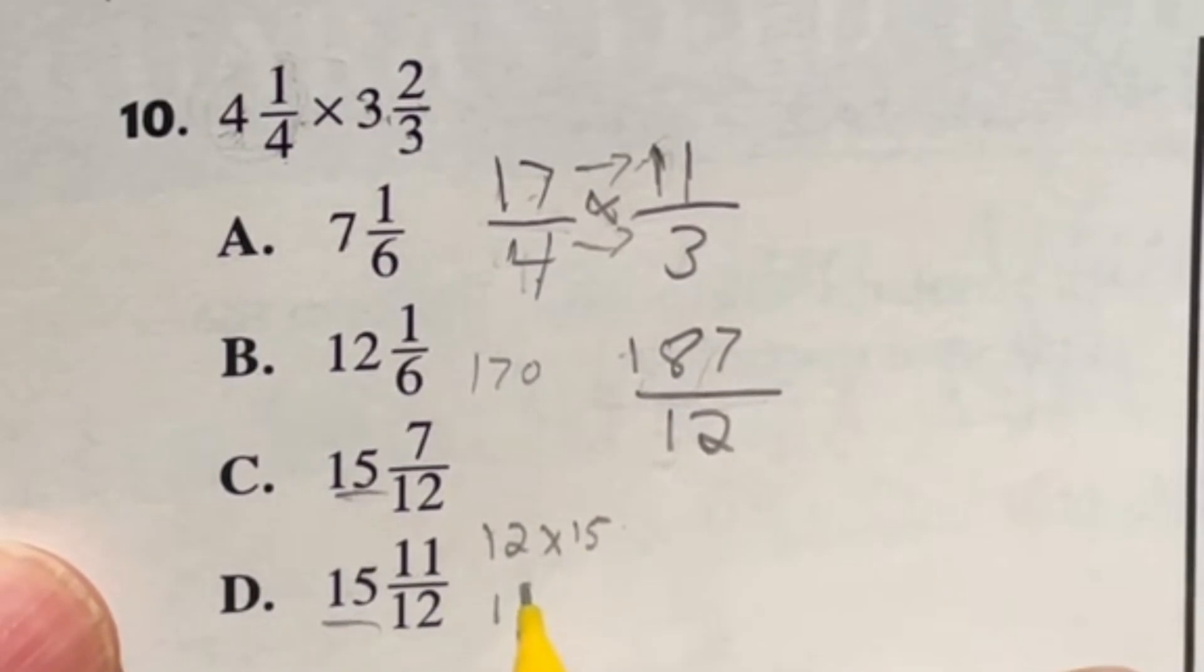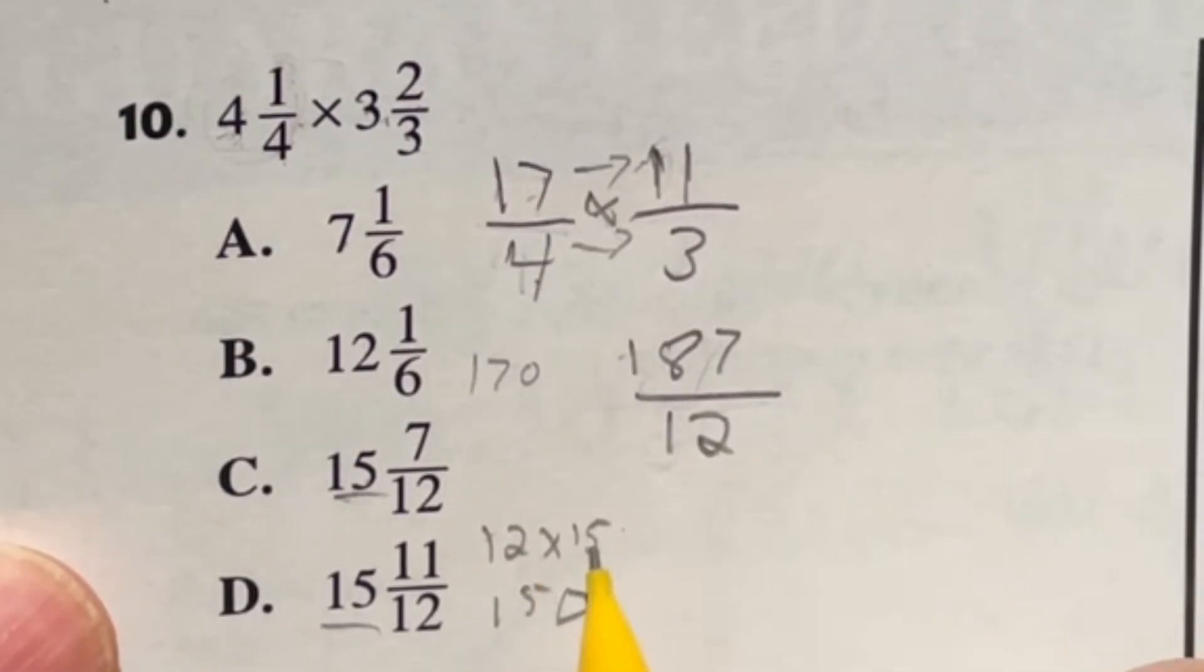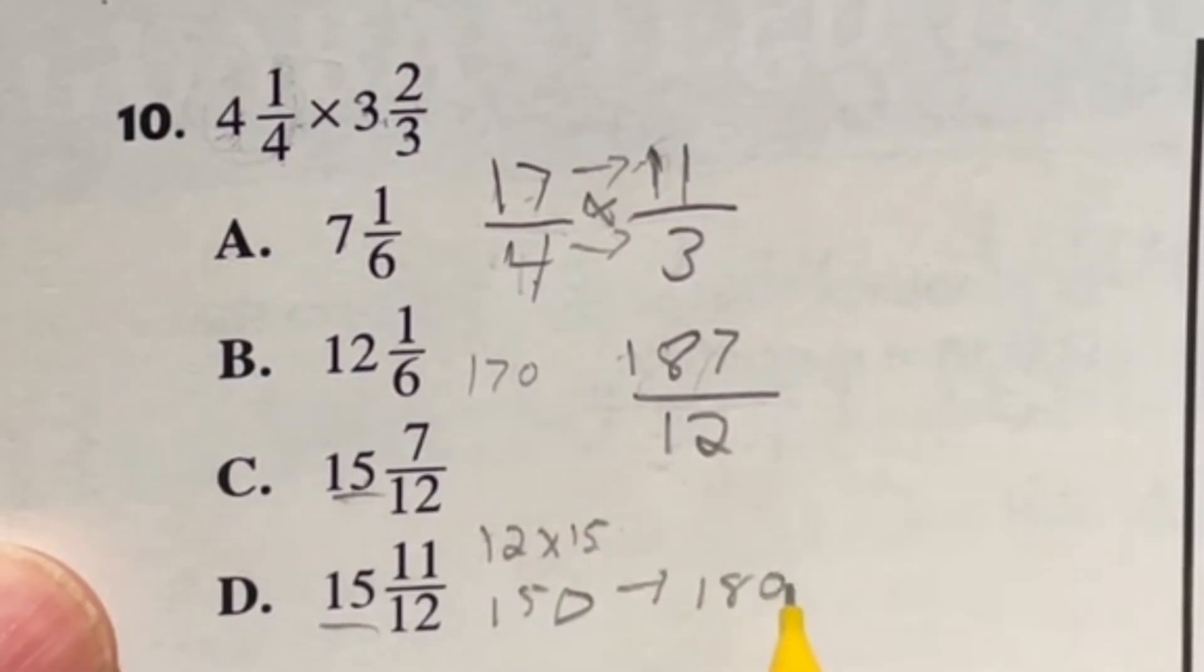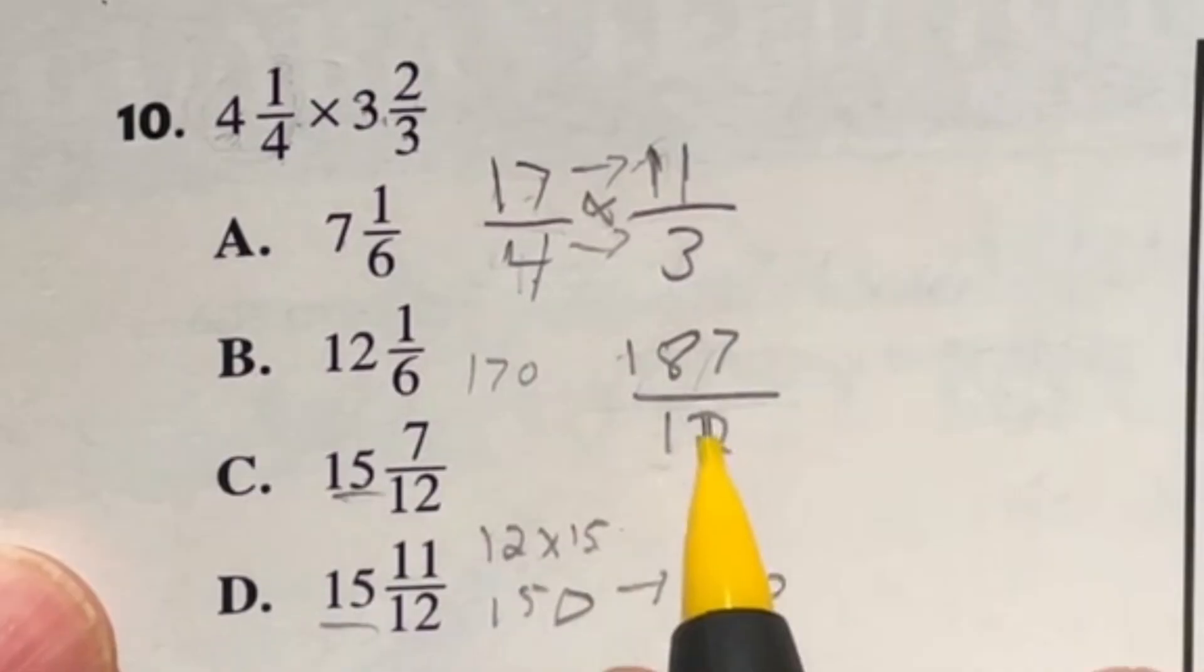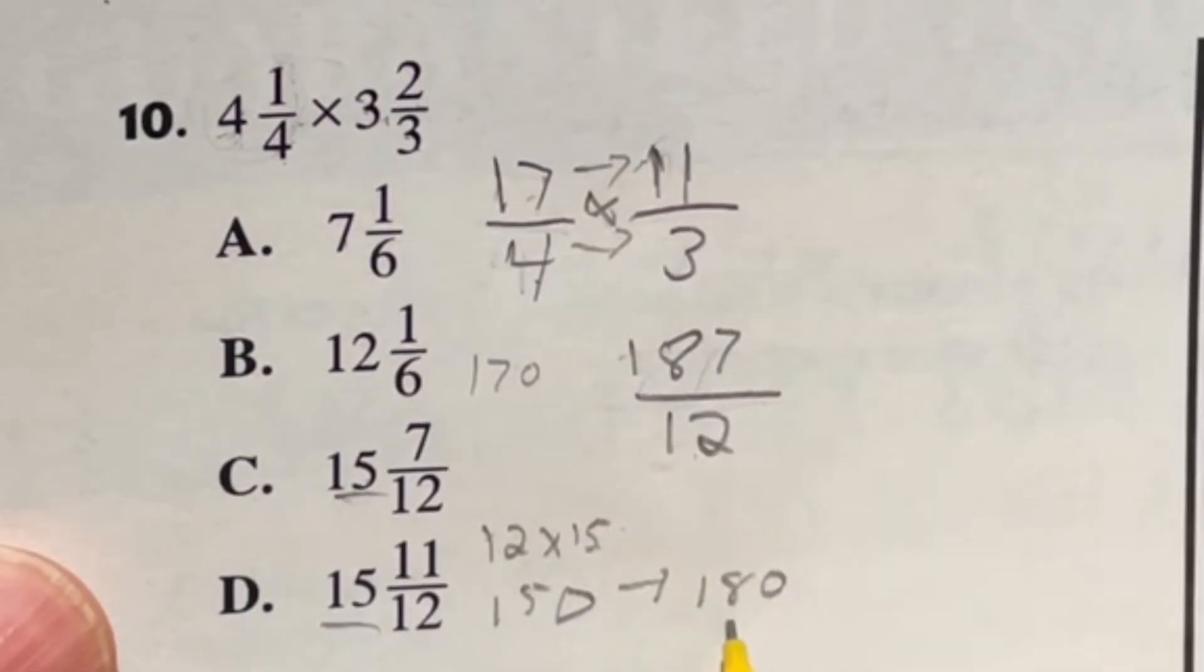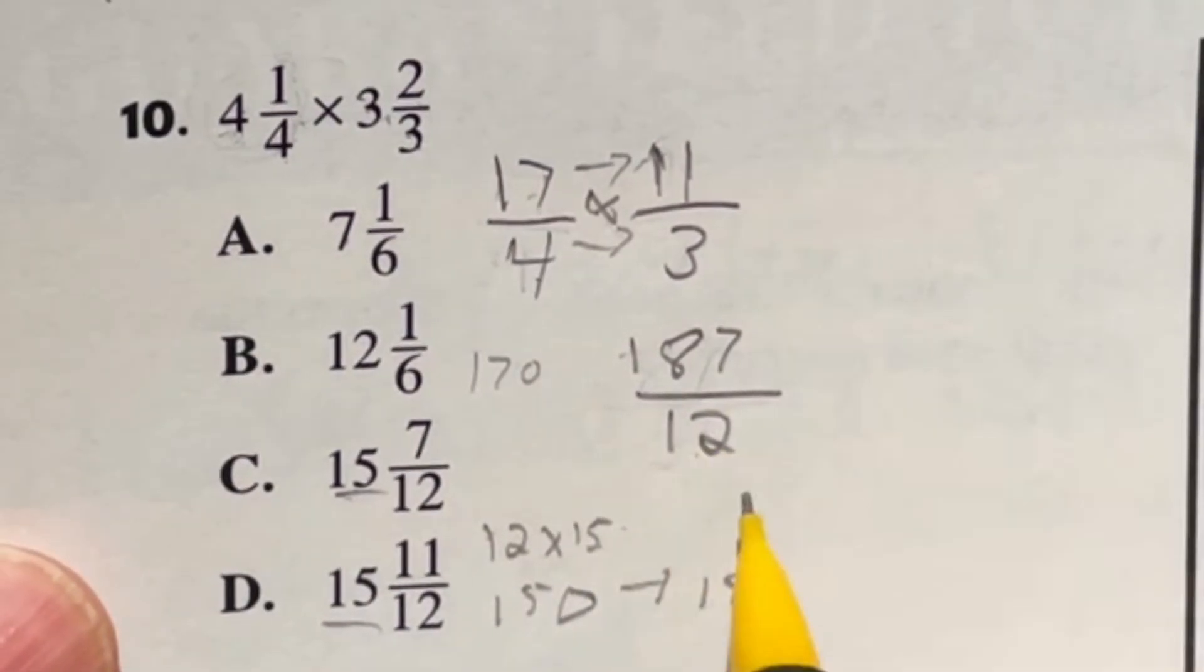Well, 10 times 15 is 150, and then I have two more of them because of being 12, not 10. So if I have two more of these guys, it's another 30. So that's going to bring us up to 180. So now knowing that, I know that 12 times 15 is 180.